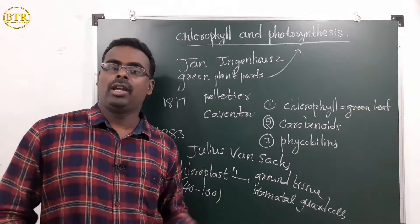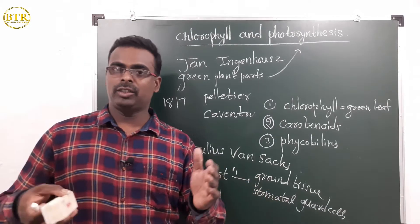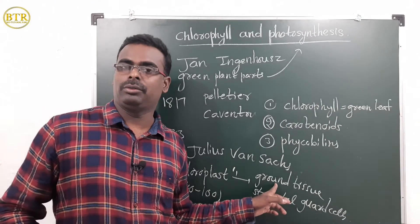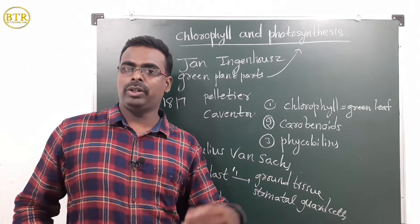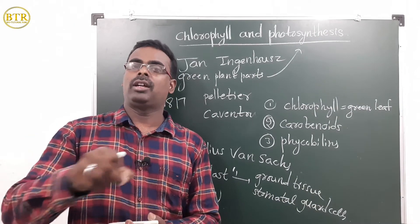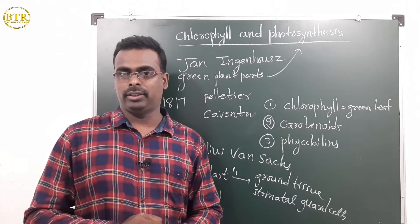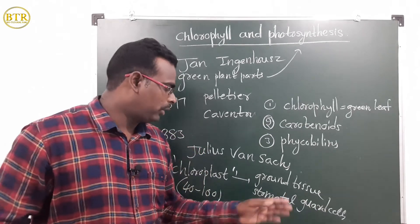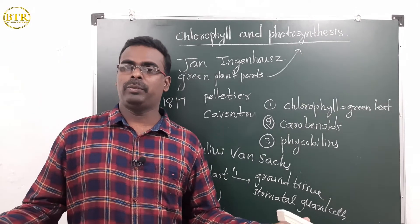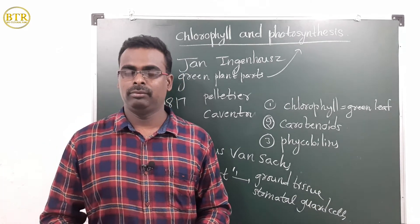Approximately 40 to 100 chloroplasts are present in these tissues. Ground tissue includes palisade tissue and spongy tissue, visible in a leaf cross-section. Stomata are small pores on the leaf surface, each made up of two guard cells, which also contain many chloroplasts. So chloroplasts are the key organelle carrying out photosynthesis.